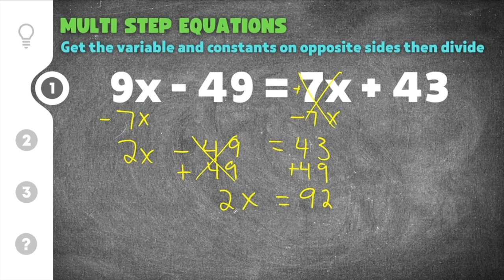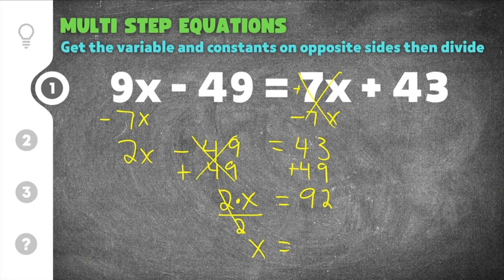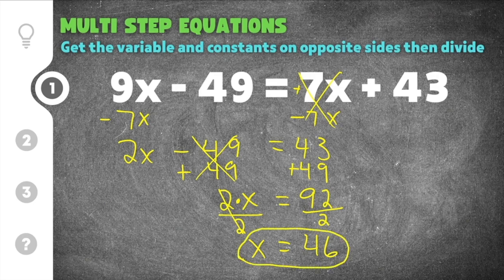To get x by itself I have to get rid of the coefficient. Since 2x means 2 times x, the opposite of multiplication is division, so I divide both sides by 2. The 2s cancel on the left, and 92 divided by 2 is 46. Our solution to this first multi-step equation is x equals 46.